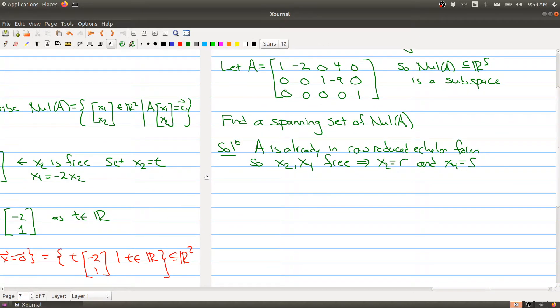I can solve for the other variables. So x1 minus 2x2 plus 4x4 equals zero. Then we have that x3 minus 9x4 is zero. And finally, we have that x5 is zero.